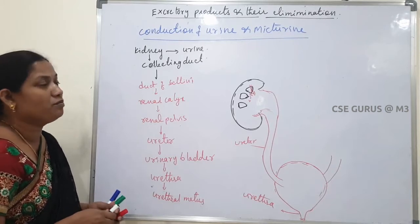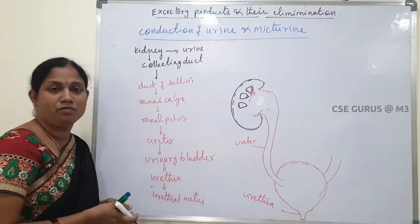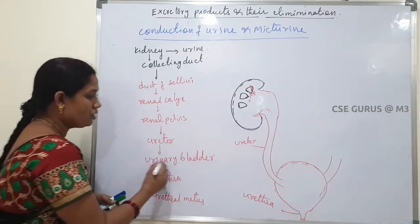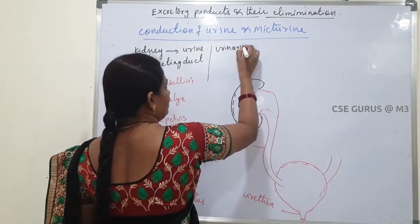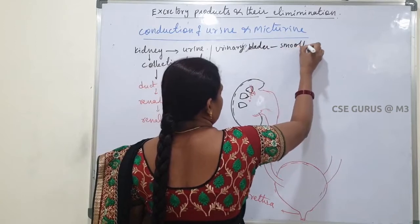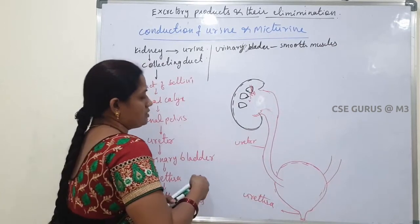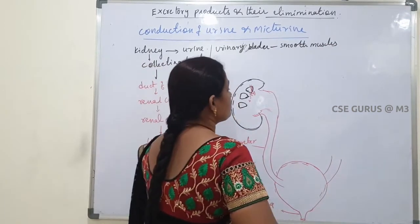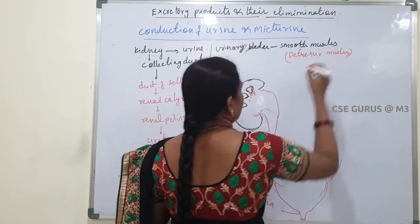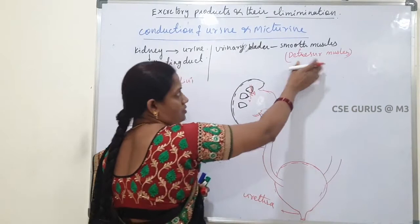Next we will talk about micturition. Micturition means the releasing of urine from the urinary bladder. The urinary bladder is made up of smooth muscles called detrusor muscles. The inner lining of the urinary bladder is made up of transitional epithelium.